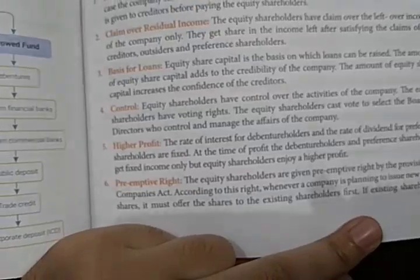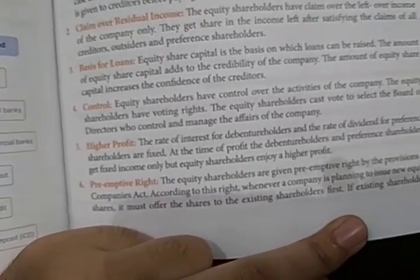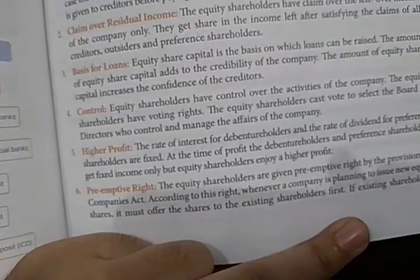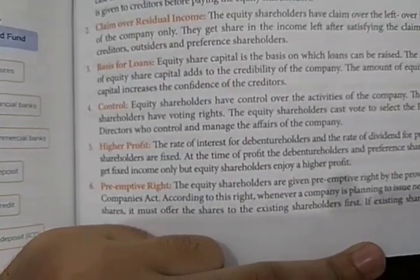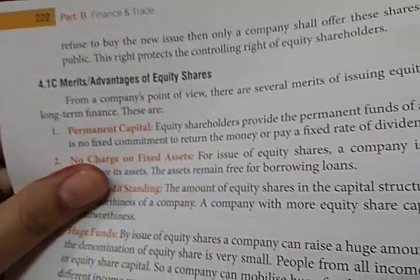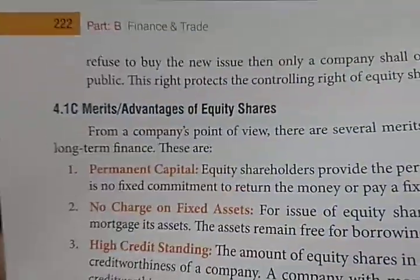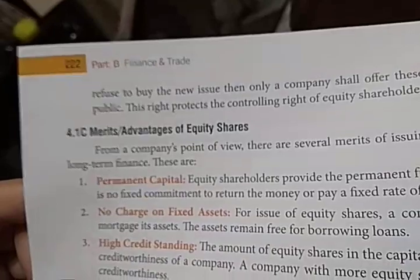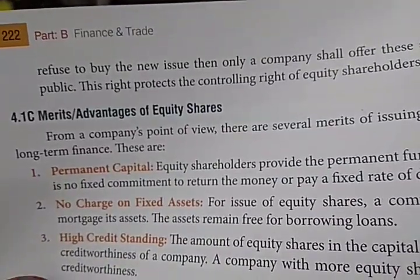Next is preemptive right. Equity shareholders are given a preemptive right under the Companies Act. According to this right, whenever a company plans to issue new equity shares, it must first offer those shares to existing shareholders. If existing shareholders refuse to buy the new issue, only then shall the company offer these shares to the general public. This right protects the controlling rights of equity shareholders.